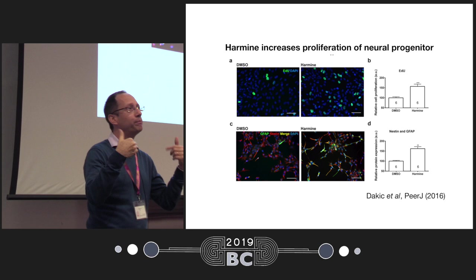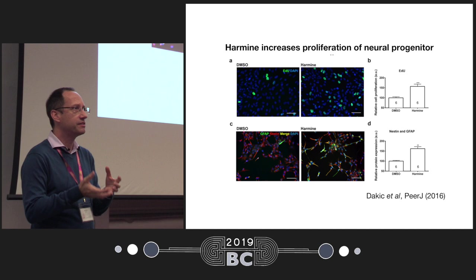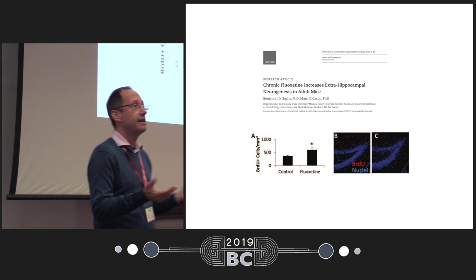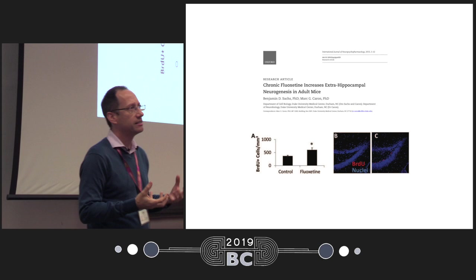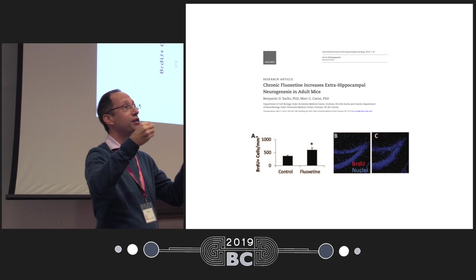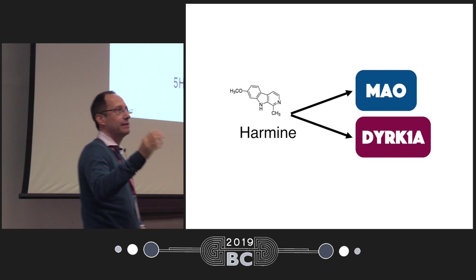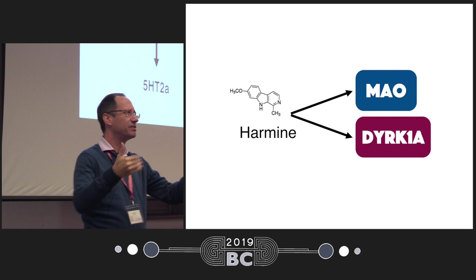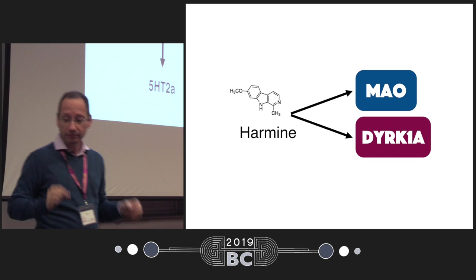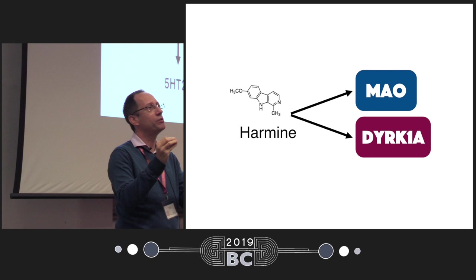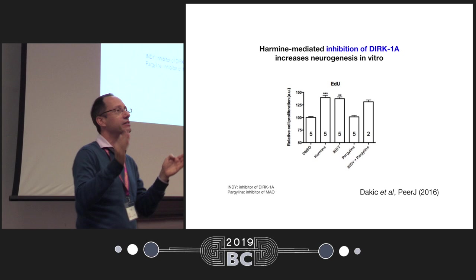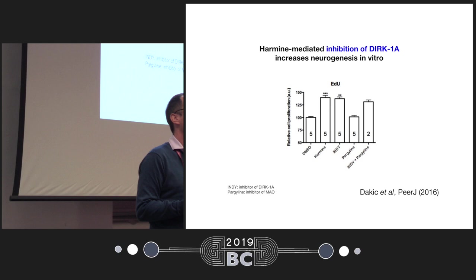We decided to ask: is there any other direct effect of harmine inside the brain? The answer is yes — harmine is able to increase the proliferation of neuroprogenitor cells in our model. This is interesting because well-known antidepressants like Prozac do the same: they also increase neurogenesis. When you see proliferation of neural stem cells or neuroprogenitor cells, it can be a sign of antidepressant effect. Harmine is able to bind to serotonergic receptors and inhibit both monoamine oxidase — which is well known — but also another enzyme called DYRK1A.